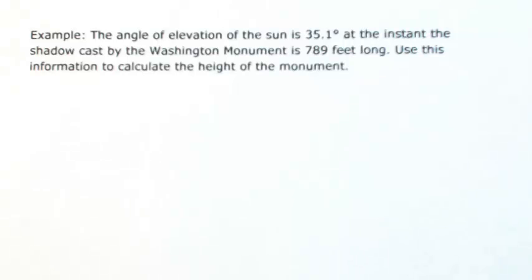The angle of elevation of the sun is 35.1 degrees at the instant the shadow cast by the Washington Monument is 789 feet long. Use this information to calculate the height of the monument.